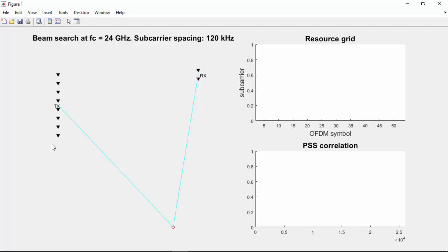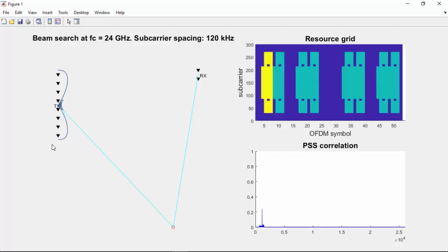You can see the GNodeB with an array of transmit antennas. It transmits the first occurrence of SSB with a beam toward the side of the space in front of it. The UE is located at around 20 degrees off the horizontal, but we assume there is no direct line of sight.